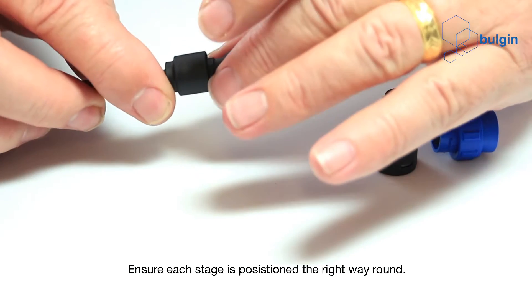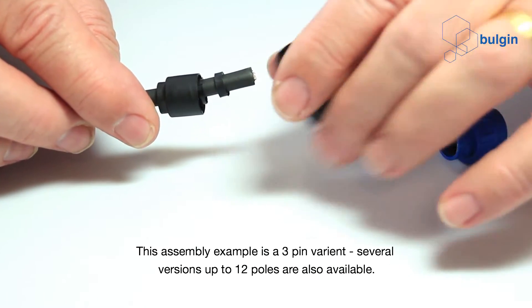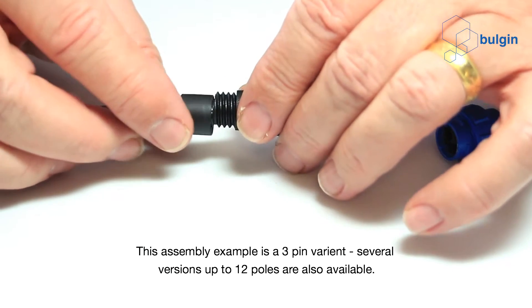This assembly example is a 3-pin variant. Several versions up to 12 poles are also available.